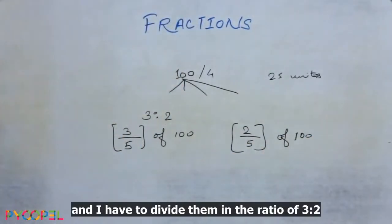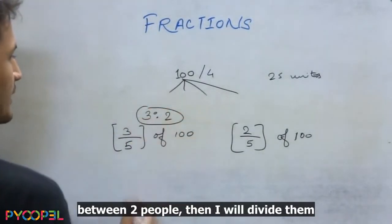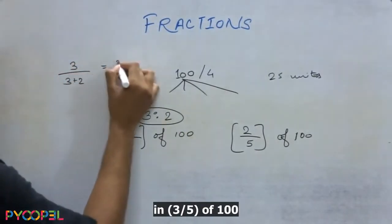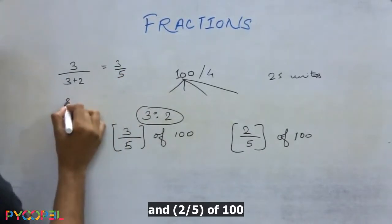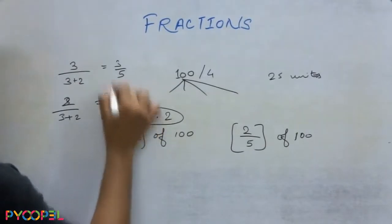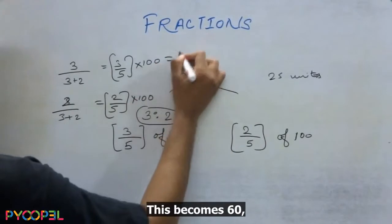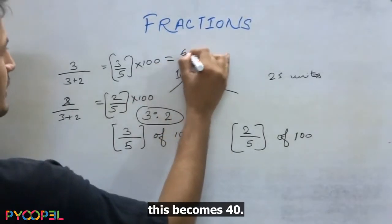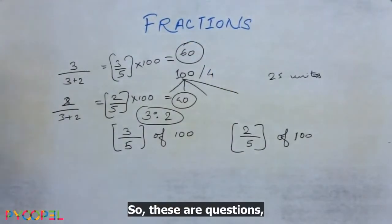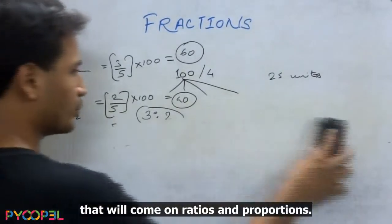So if I have hundred rupees and I have to divide them in the ratio of three is to two between two people, then I will divide them in three by five and two by five of hundred. This becomes sixty. This becomes forty. So these are questions that will come on ratios and proportions.